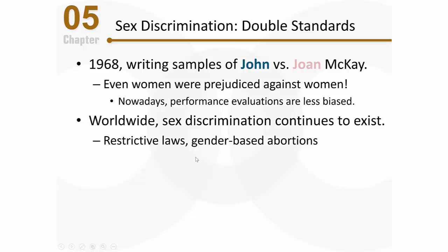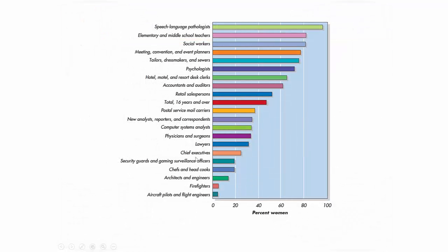Some discrimination exists on a more everyday level. Looking at work roles, women are more heavily represented percentage-wise in service-oriented careers that often pay less — positions like teachers, social workers, meeting and event planners, clothing workers, hotel clerks, and various service sector jobs. Psychologists are in that category too, though they get paid fairly well.